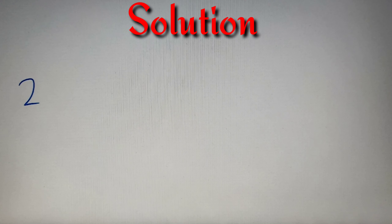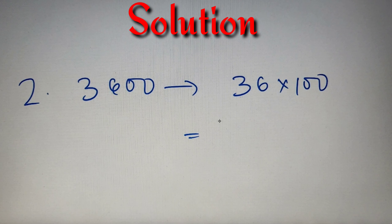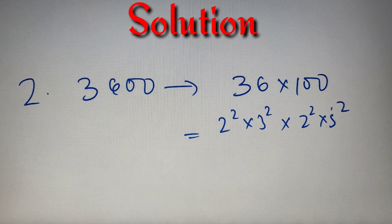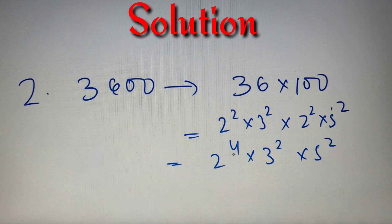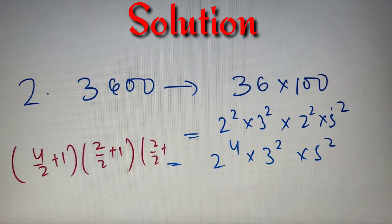According to our second problem, we have to find how many factors of 3600 are perfect squares. First we prime factorize: 3600 = 36 × 100, and since 36 = 6² = 2² × 3² and 100 = 2² × 5², the prime factorized form of 3600 is 2⁴ × 3² × 5². Putting the values into the formula, we get floor(4/2) + 1 × floor(2/2) + 1 × floor(2/2) + 1, which equals 3 × 2 × 2 = 12.